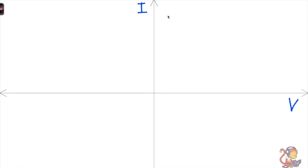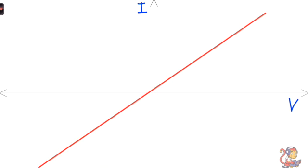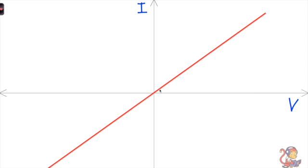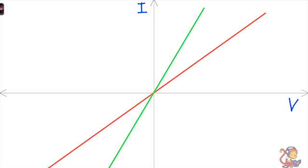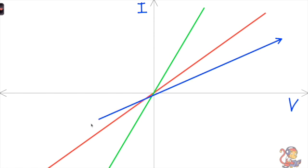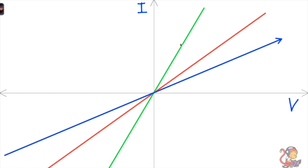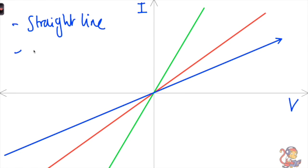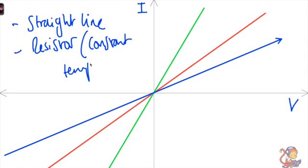Let's start off with the resistor. I've put current up the side and potential difference along the bottom. For a resistor, the shape we need to recognise is that the relationship between current and potential difference would be a straight line that goes through the origin. Depending on the resistor, it might be a straight line at this angle or perhaps at a different angle. It doesn't matter the angle of the line, but we need to recognise that this straight line going through the origin is the current-potential difference graph for a resistor.